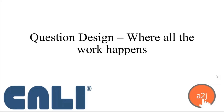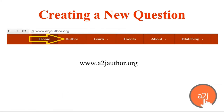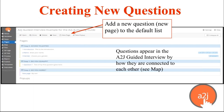Now we're going to talk about question design. This is where 95% of the work that you do in A to J Author will happen. The first step is to log in — go to atajauthor.org and click the Author tab. Once you are in the authoring tool, you either open up a blank interview or work on one you've already started. From that point, where you're going to spend most of your time is on the Pages tab, and we'll dive deeper into the Question Design Editor, which is where you actually make changes to pages and add new questions.